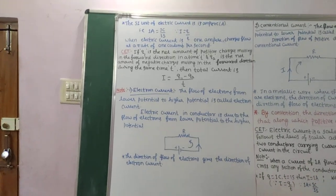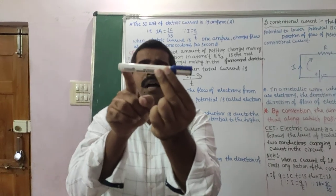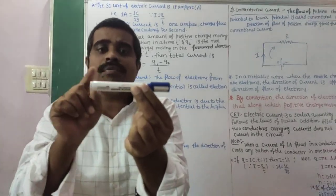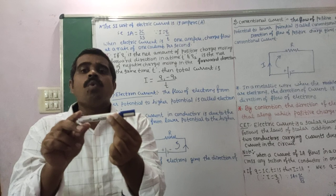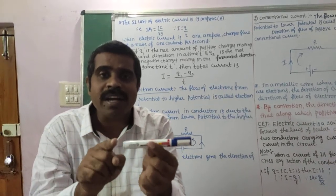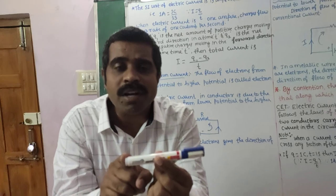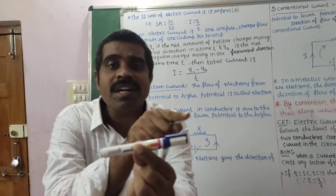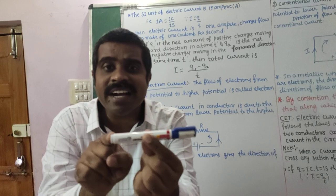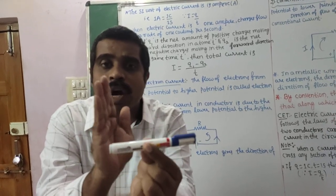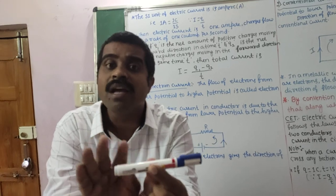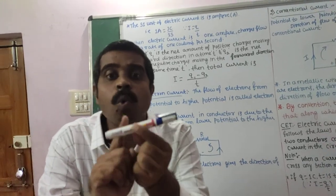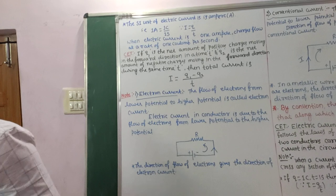This is a conductor. I want to say 1 ampere current is flowing through this conductor. If 1 coulomb of charge flows in 1 second, then we can say 1 ampere current flows through this conductor. From end A to end B, if 1 coulomb of charge flows from point A to point B in 1 second, then the current flowing through this conductor is 1 ampere. 1 ampere is equal to 1 coulomb per second.